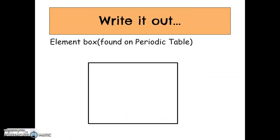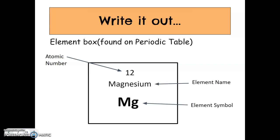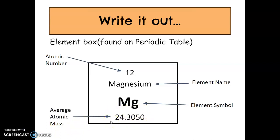As a refresher for the box we find on the periodic table: we have our atomic number on the top, then our elemental name, our element symbol, and our average atomic mass on the bottom. The average atomic mass — the number you see on the table — is actually an average of all the isotopes of that particular element. For magnesium, if we took all the isotopes and averaged them together, the average mass would be 24.305. Note: on some tables these two numbers might be flipped. You can always tell the difference because the atomic number will always be smaller and always a whole number.